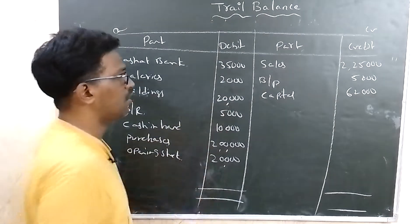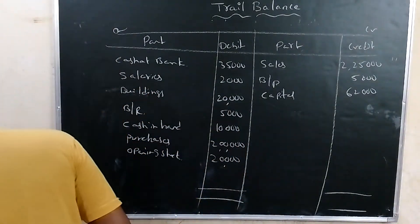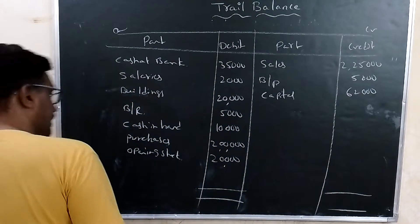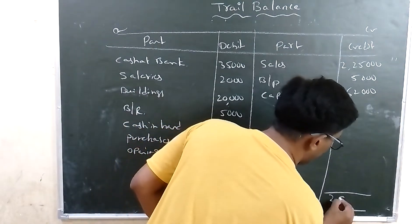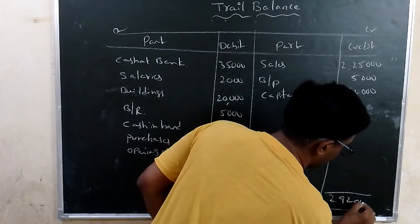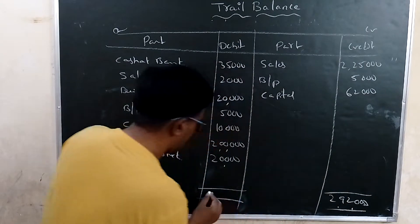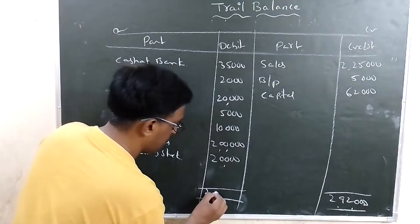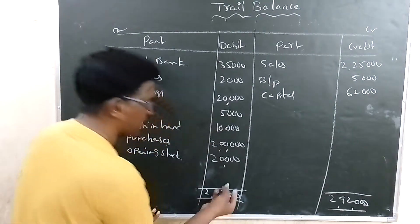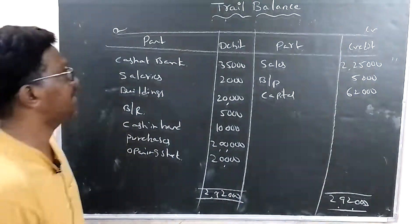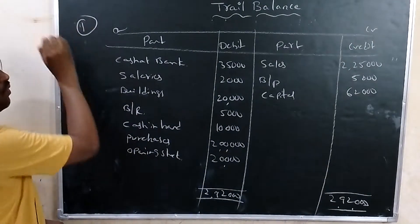The total of both debit and credit sides comes to 2,92,000. Both sides are equal, which confirms the trial balance is correctly prepared. This completes problem one.